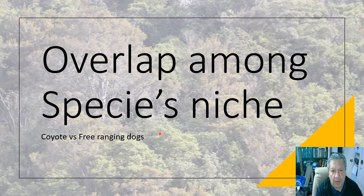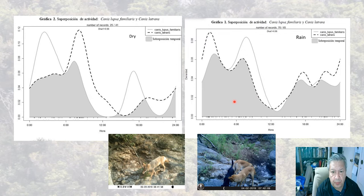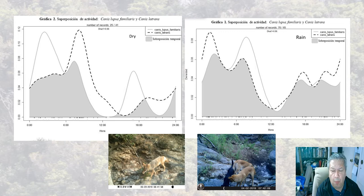Then, we decided to study another two mesopredators — the largest ones in the area — and see how much they overlap their niche. We studied the coyote and free-ranging dogs, the dogs who have been abandoned in the area and become natural predators. As we could see in the gray area, the overlap of activity becomes much larger during the rainy season than during the dry season. That indicates that competition among these animals becomes harder during the rainy, more resource-rich season.